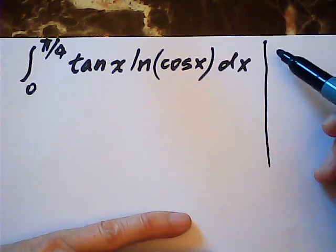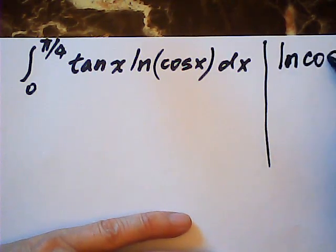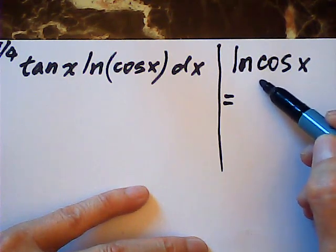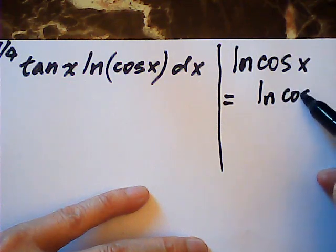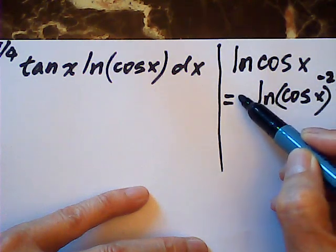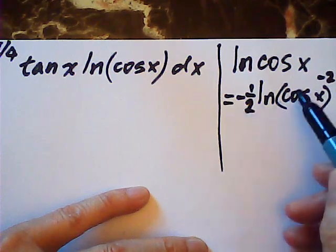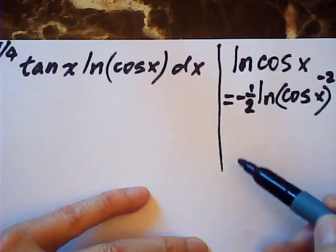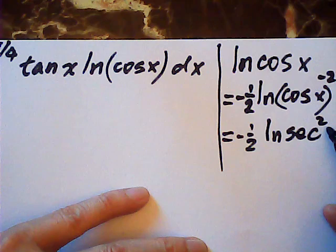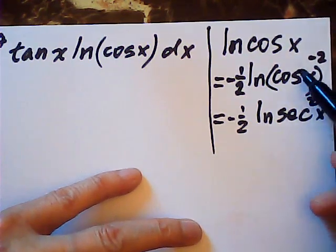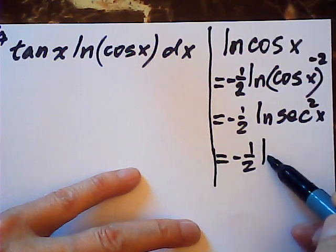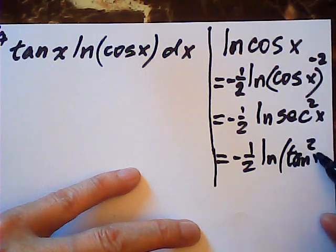We see that log(cos x) is equal to log(cos x) to the power of negative one half — they are equal. And this is equal to negative one half log(sec² x), because one over cosine is secant. And this is equal to negative one half log(tan² x + 1).